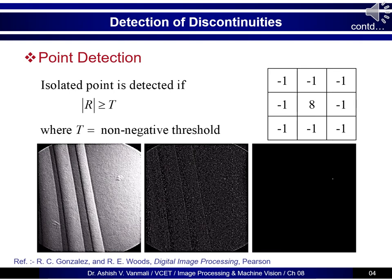Let us first consider point detection. The 3x3 mask used for identification of point discontinuity has a center element with weight 8, and all the other 8 neighbors have a weight of minus 1. Hence, if there is no discontinuity, the result will be 0. If there is a point discontinuity, the weighted sum will result in a very high value, since the isolated point or center element will have a weight of 8. When we compare the absolute value of the result with the threshold, if it is greater than the threshold we call it an isolated point, else it is a normal image point. The threshold used is non-negative because we consider the absolute value of the resultant weighted sum.